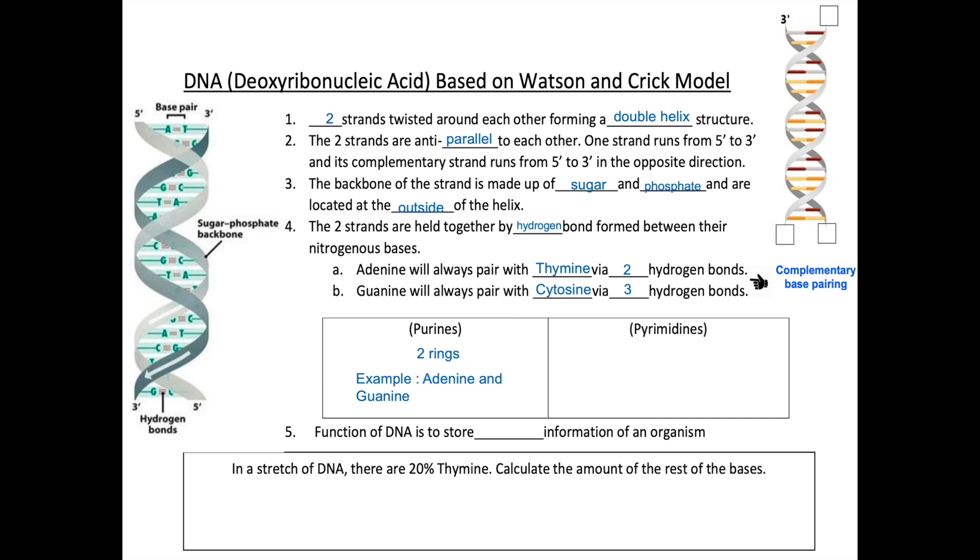Pyrimidines, however, are only made up of one ring. The examples of pyrimidines are cytosine and thymine.